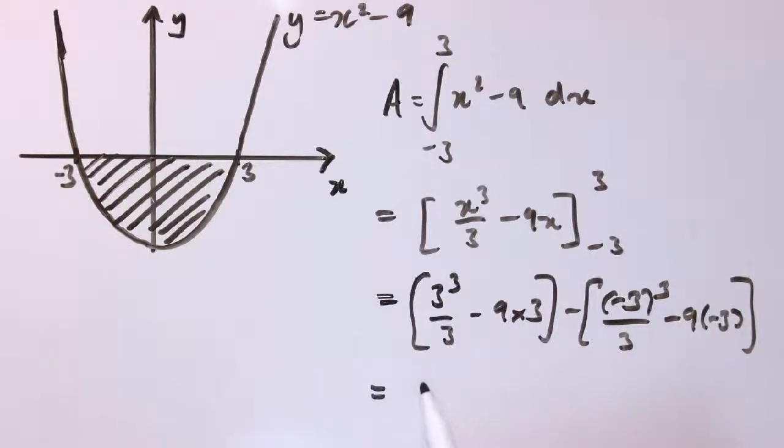And I get minus—and then in here I've got -3³, that's -27/3, so that's -9, and that's +27. So I've got -18 minus another 18, so that's -36 units².